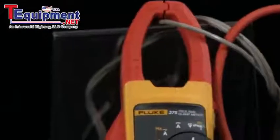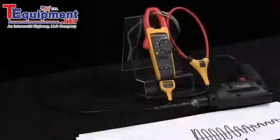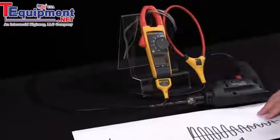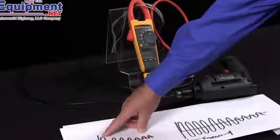To use inrush with iFlex, we simply turn it to the iFlex mode instead of the normal current mode, hit the inrush mode and now we can capture inrush. Fluke has a unique design in that we don't capture the first peak that we see with the amps.